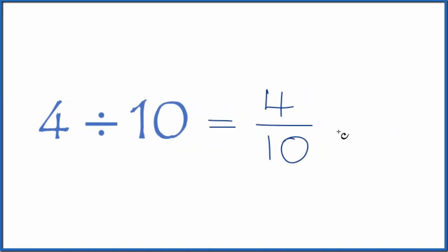And we can simplify this. They're both even numbers. Let's divide 4 by 2, which gives us 2. 10 divided by 2 is 5. So we could simplify that down to 2 fifths.